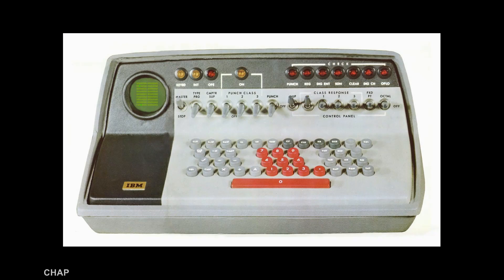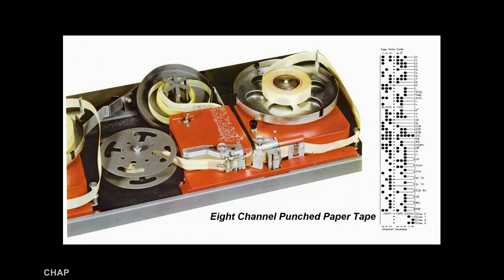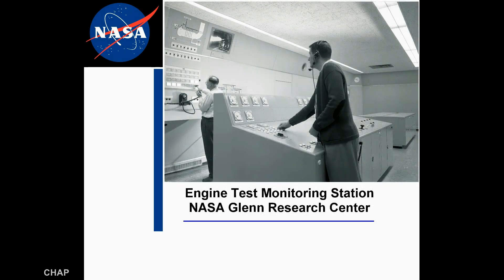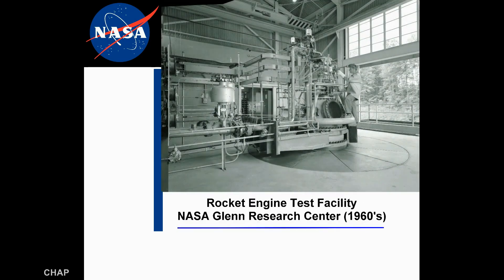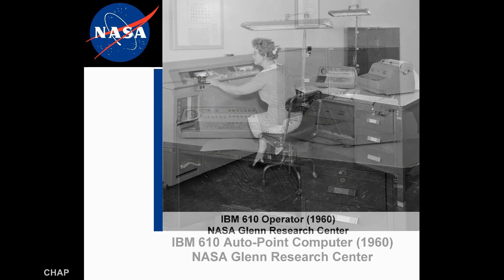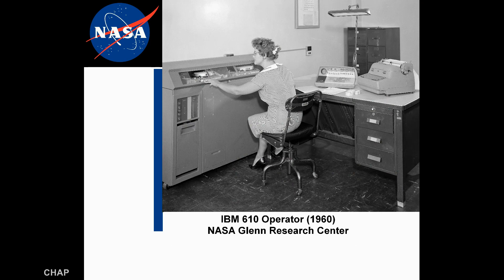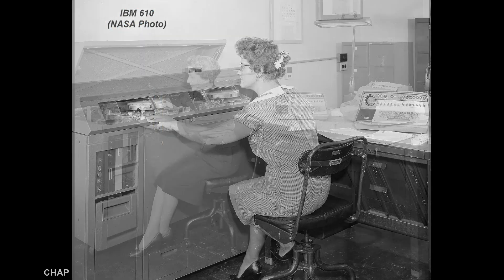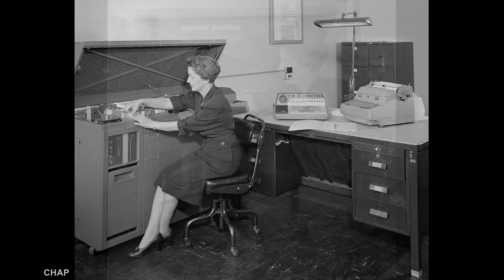The 610 could take data directly from the keyboard or via punched paper tape. One of the users of the 610 was NASA's Glenn Research Center in Cleveland, Ohio, a designer and developer of innovative technology to advance NASA's missions in aeronautics and space exploration. These NASA photos, taken in May 1960, show 610 operators utilizing the paper tape reader machine. Also notice the sound-absorbing material inside the top cover of the unit, which helped quiet the sound of the tape mechanism.